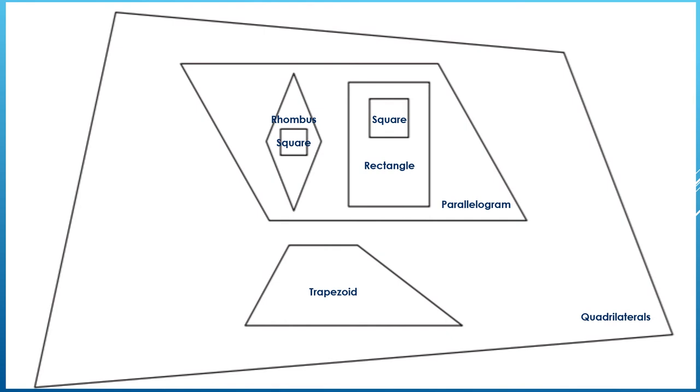Now let's look at this diagram and answer some questions. Why is the trapezoid inside the quadrilateral but outside the parallelogram? Because a trapezoid is a quadrilateral, but it is not a parallelogram. Let's answer another question together. Why are there a rhombus and a rectangle inside the parallelogram? Because both rhombuses and rectangles are types of parallelograms.